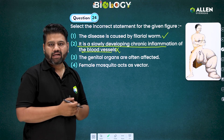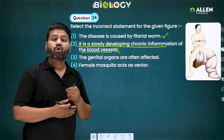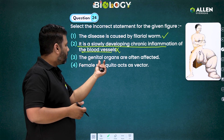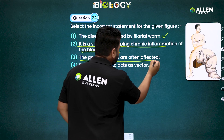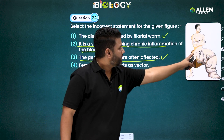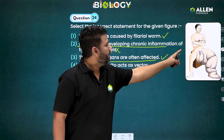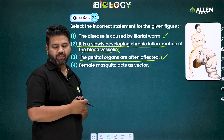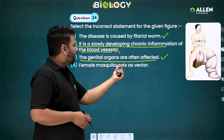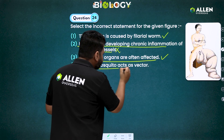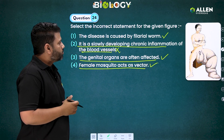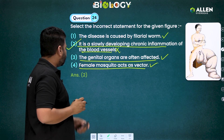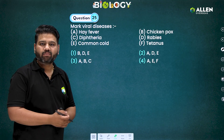In elephantiasis, there is gross deformity of the genital organs. The third statement says genital organs are often affected — absolutely correct, as seen in the diagram where the scrotal area is highly deformed. The fourth statement says a female mosquito acts as a vector — also absolutely correct. So the incorrect statement is the second one, making option number two the answer to question 24.